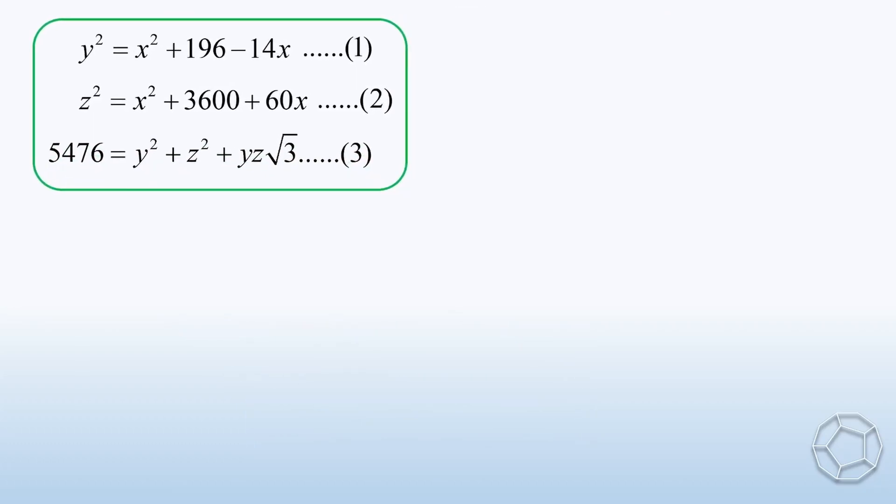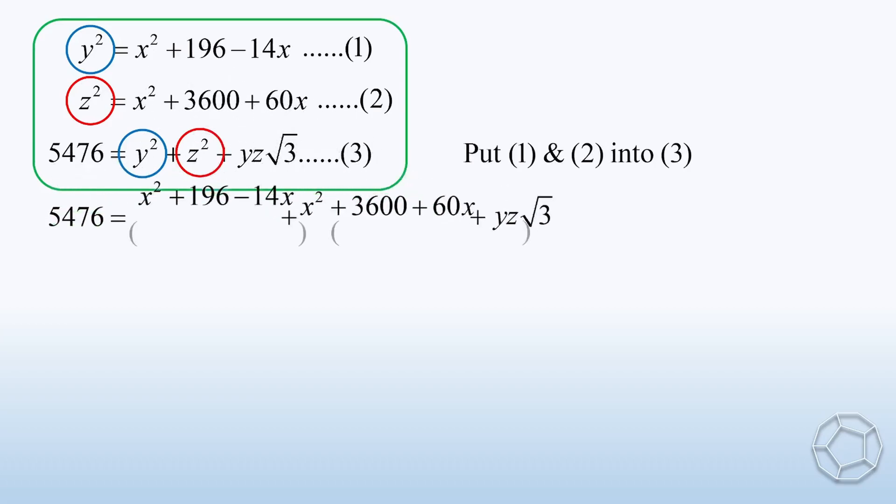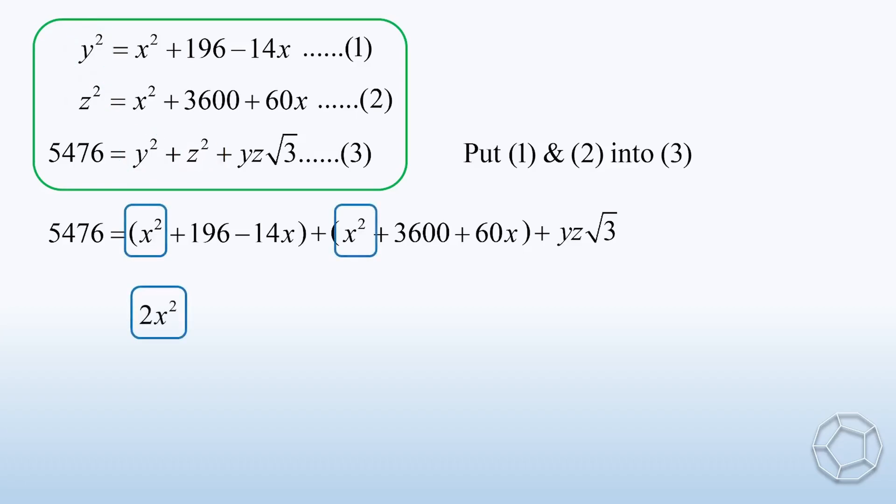Let's put the three equations together. We can substitute Y squared from equation 1 into equation 3. Likewise, we can do the same for Z squared from equation 2. Then, we get the following. It looks a bit messy, but we can simplify it right away. There are some like terms, such as the X squared terms and the X terms. We also have another unknown term on the right. Next, put all the constant terms to the left. Then, the equation becomes 1680 is equal to 2X squared plus 46X plus YZ times square root 3. Let's call this equation 4.